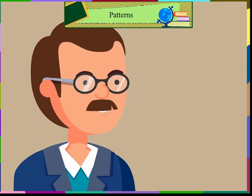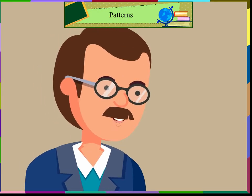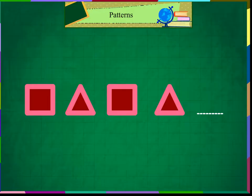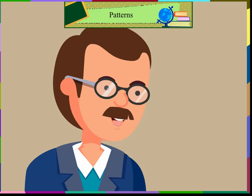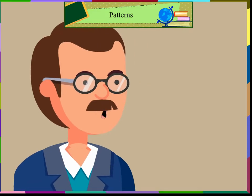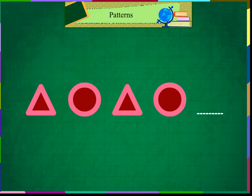Let us see if you can continue these patterns. Fill the next pattern in the table shown here. What will be the next thing in the first pattern? Square, triangle, square, triangle, square. Good. What will be the next shape in the second pattern? Triangle, circle, triangle, circle, triangle. Good.